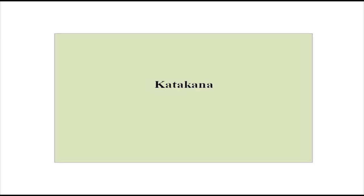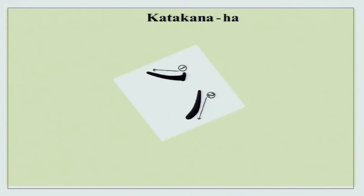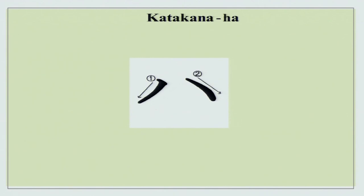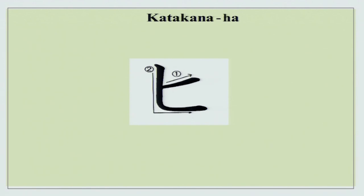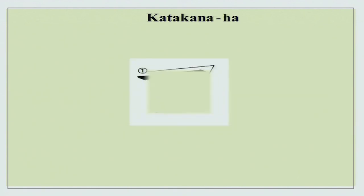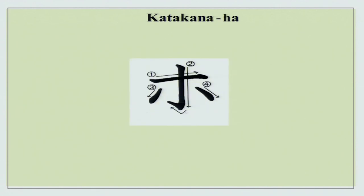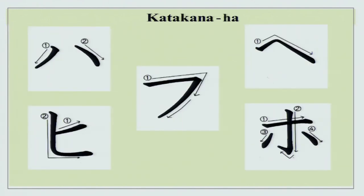We have been doing katakana and have completed a number of syllables. Now we have the Ha series — simple stroke order for line 1 and line 2. It is important because in the script we write hiragana, katakana, and kanji simultaneously, so you need to learn all three. The stroke order is given clearly: ha, hi, fu, he, and ho.